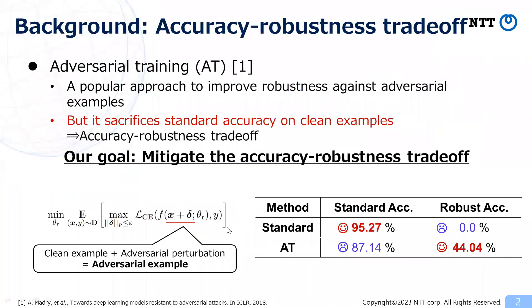First of all, I will explain the background of this work. Deep neural networks (DNNs) are vulnerable to adversarial examples. To enhance adversarial robustness, adversarial training (AT) is widely adopted — it trains the DNN using adversarial examples. However, AT comes at the cost of reducing standard accuracy on clean examples, leading to an accuracy-robustness trade-off. Our goal is to mitigate this trade-off.